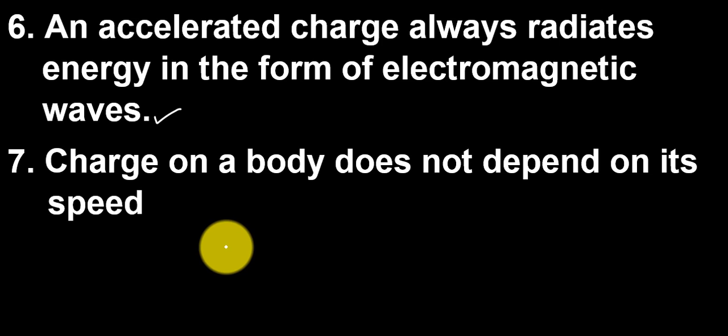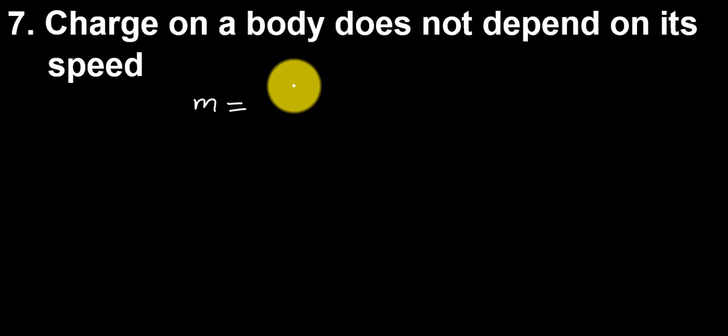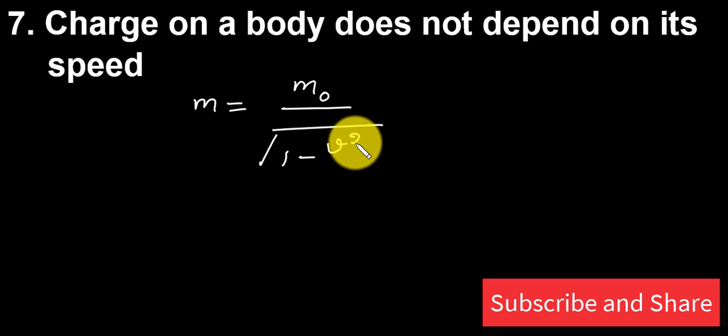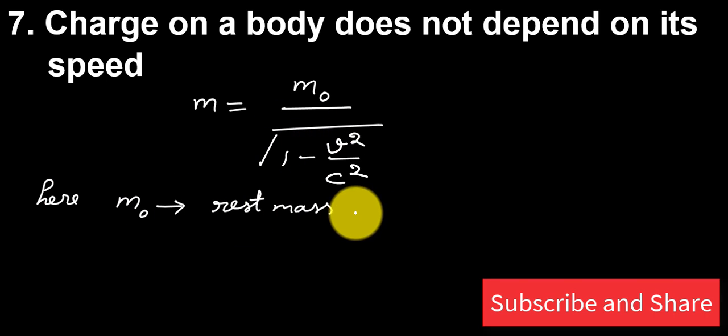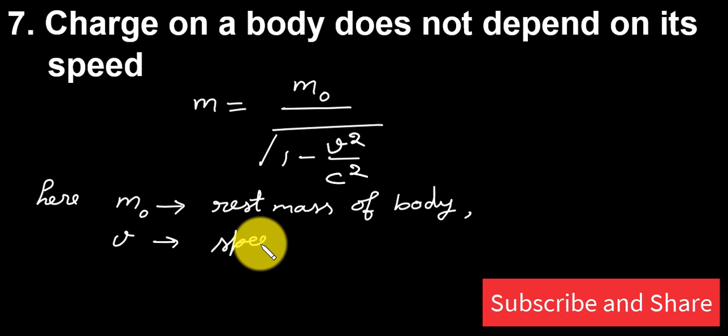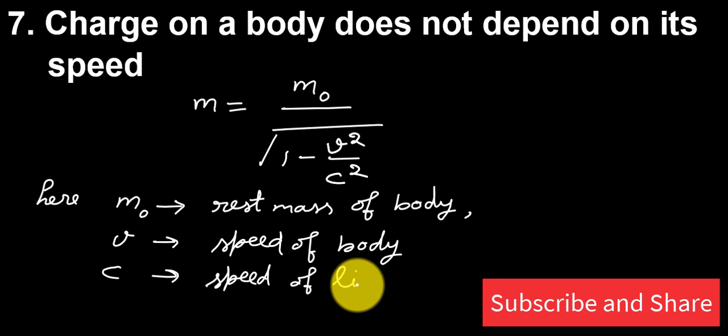Seventh property is charge on body does not depend on its velocity. Here, it should be noted that mass depends on velocity of the body according to relation M = M0 / √(1 - v²/c²). Here, M0 is the rest mass of the body. V is the speed of body. C is the speed of light. M is dynamic mass, that is mass in motion.